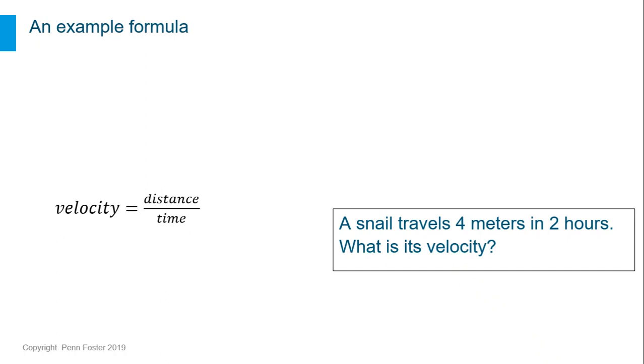For example, if a snail travels 4 meters in 2 hours, the distance is 4 meters and the time is 2 hours. To solve, take 4 divided by 2 and get a result. Velocity equals 2 meters per hour.